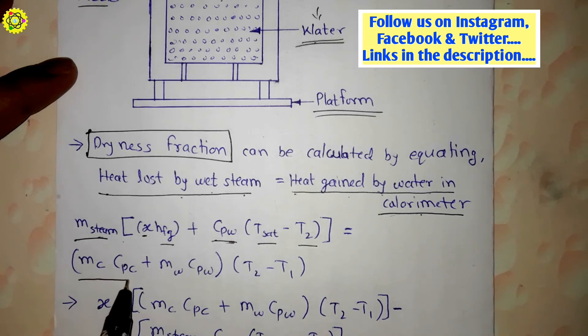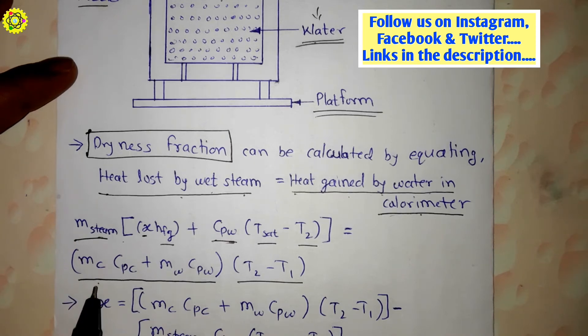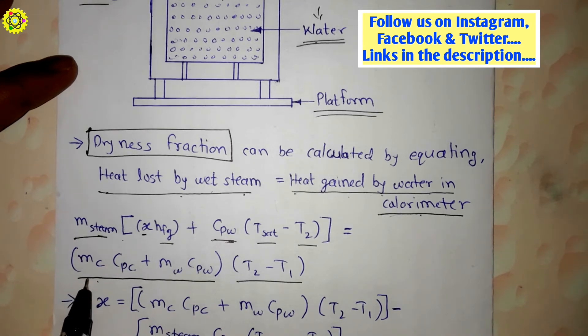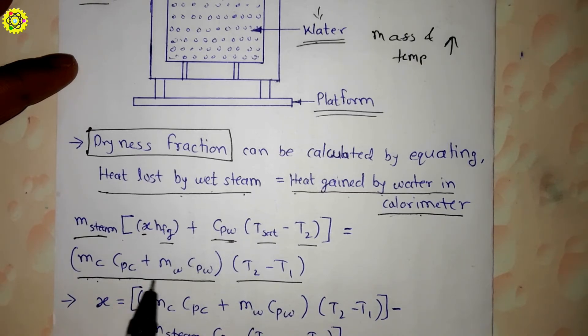Further, now heat gain by water in calorimeter is given by this equation: (m_c × c_pc + m_w × c_pw) × (T_2 - T_1). Here m_c is the mass of barrel calorimeter and c_pc is the specific heat of barrel calorimeter which is measured in kilojoule per kilogram kelvin.